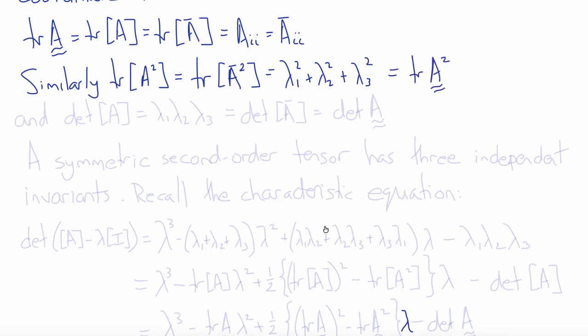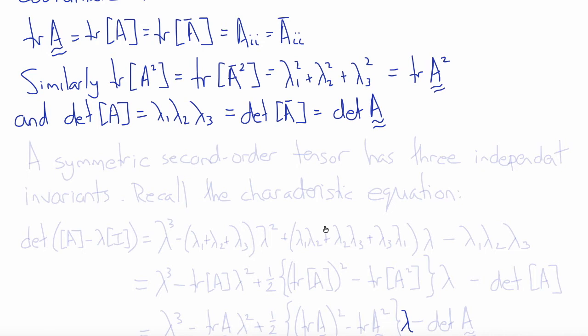The same is true of the determinant. The determinant of A equals the determinant of the diagonalized matrix, which is the product of the eigenvalues lambda 1, lambda 2, lambda 3. And regardless of which frame of reference you measure the tensor in, the determinant you calculate will always be the same number, and will always equal the product of the eigenvalues. So the determinant is an invariant.